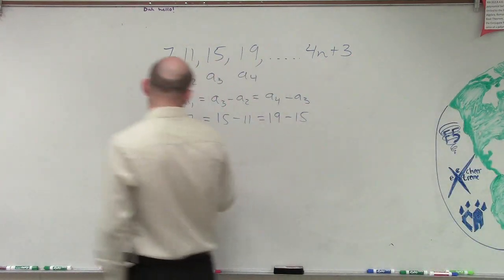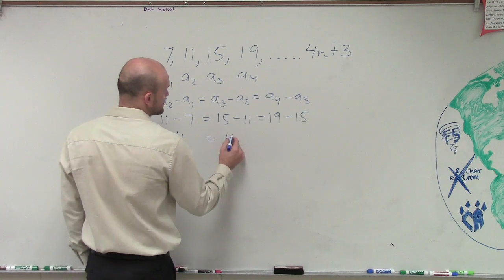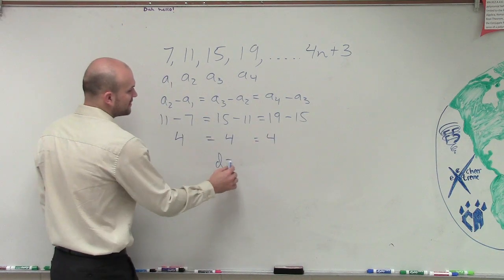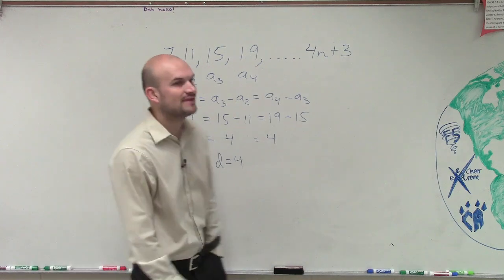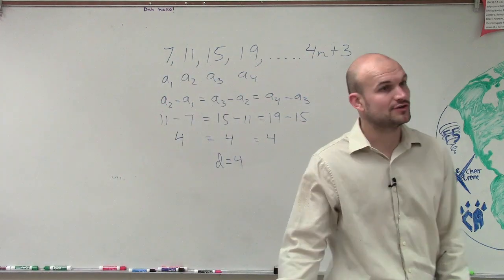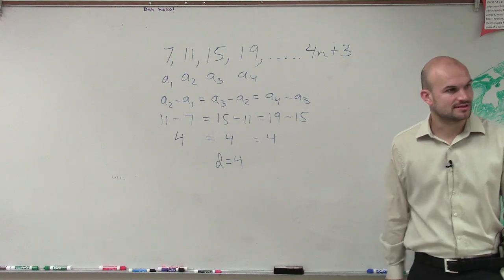And what you notice is, yes, these all have a difference of 4. So therefore, you can say your difference is equal to 4. Since you have a constant difference between each of your terms that we've tested, you have an arithmetic sequence.